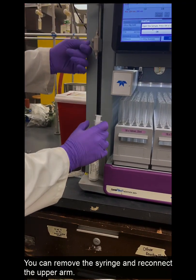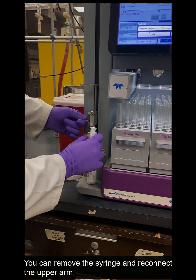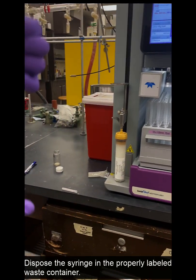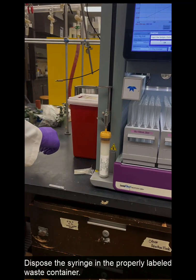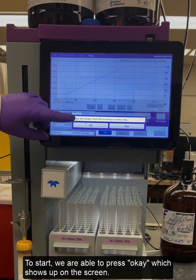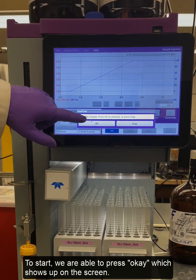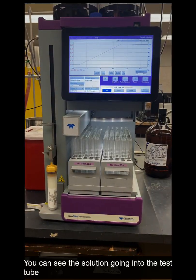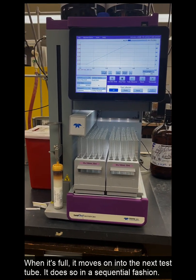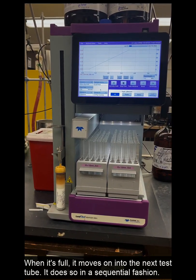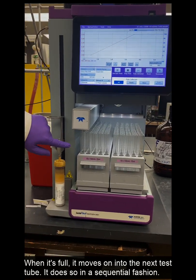You could remove the syringe, reconnect the upper arm, and dispose of the syringe into the properly labeled waste container. To start we are able to press OK that shows up on the screen. You see the solution going into the test tube, and when it's full it actually moves on to the next test tube and it is so in a sequential fashion.